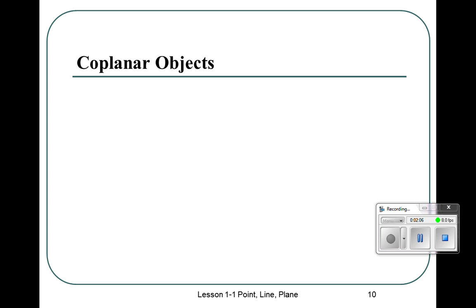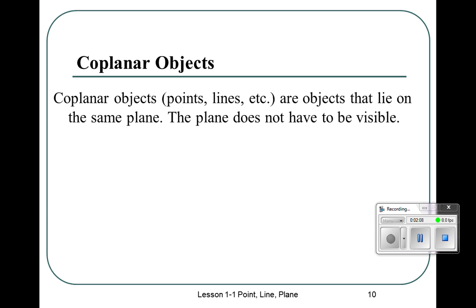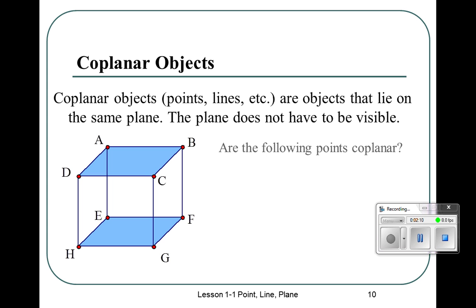Okay, coplanar objects. They lie on the same plane. Let's ask ourselves, are the following points coplanar? A, B, and C. Yes. They lie on the top of the box. There's only three points. Any three points will make a plane.